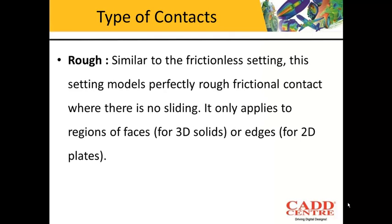The last type of contact is rough contact. This is similar to the frictionless setting and it models a perfectly rough frictional contact where there is no sliding. However, the surfaces are allowed to separate from each other. The coefficient of friction considered here is generally infinite — mu equals infinite. So these are the five types of contacts that we have in ANSYS Workbench.